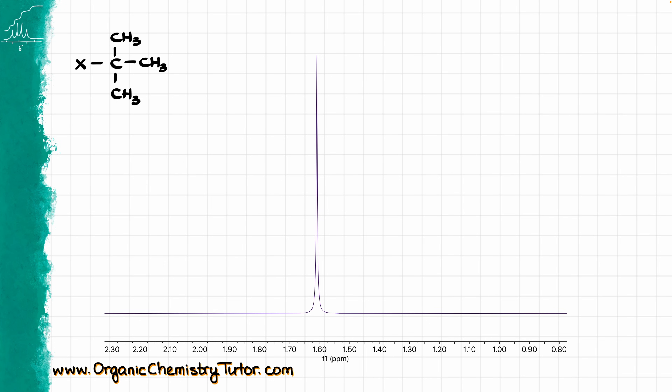Before we move on to the next block, here is a low-hanging fruit — the tert-butyl group. Whenever you see one giant singlet responsible for nine hydrogens, that is your tert-butyl group. That one is easy, let's move on.